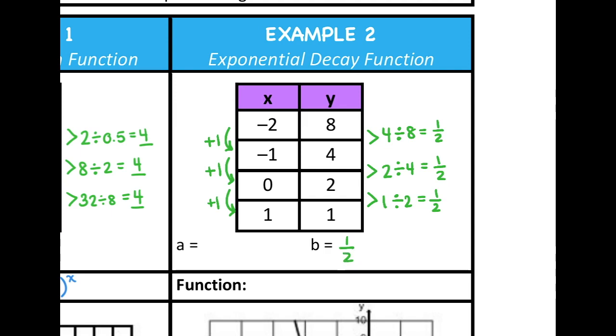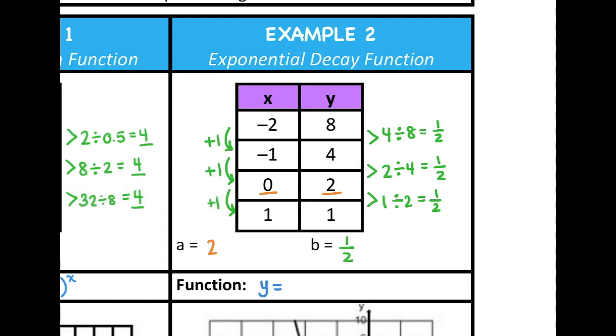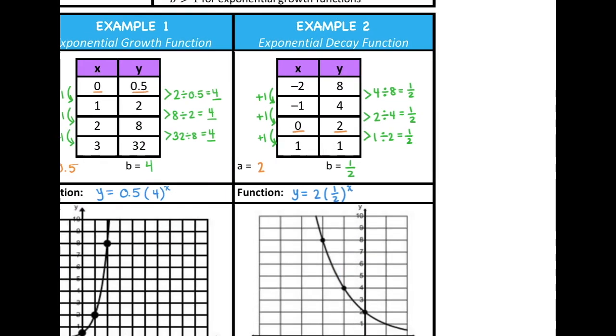Now we need to identify the initial value. So on my table, I want to find where x equals zero because that y value is going to be what I write down for a. So a equals two in this case because x is zero, y is two. So a is two. And then to substitute those values in for a and for b in the exponential function form, we get y equals two times one half to the x power.